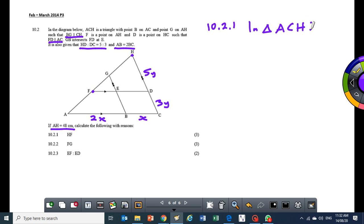I can say HF, I want HF. So I can use one of the correlators because I know the length of AH. So I can say HF over AH will be equal to HD over HC. And my reason is line parallel to one side of triangle.